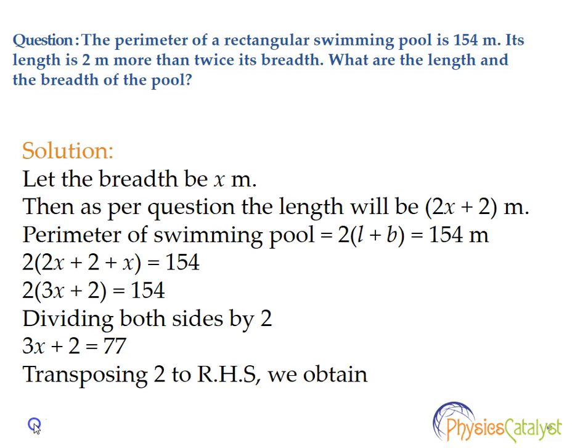We know that the formula for the perimeter of a rectangular pool is 2(length + breadth). So the linear equation here would be 2(2x + 2 + x) = 154.